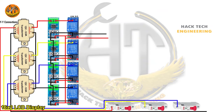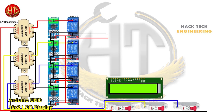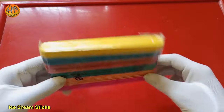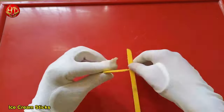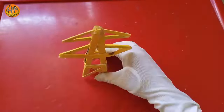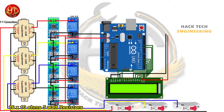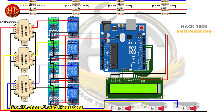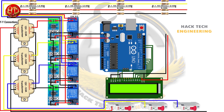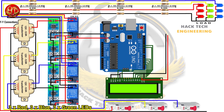Then I took a 16 by 2 LCD display and Arduino Uno and made the connections. After that I made a transmission tower using ice cream sticks. Then I took 10 ohm 5 watt resistors to make the transmission line by connecting 4 resistors in series at each line, considering a resistance of 10 ohm after every 2 kilometers of distance. Power is supplied at the start of the transmission line from the relay outputs coming from transformers, and a load of 3 LEDs is connected at the end of the transmission line.